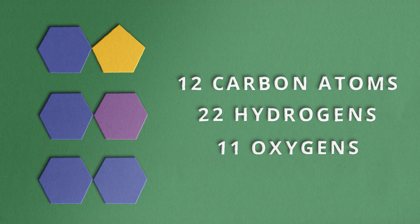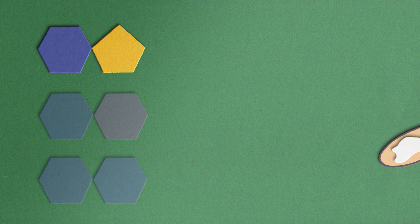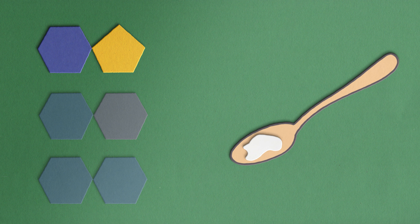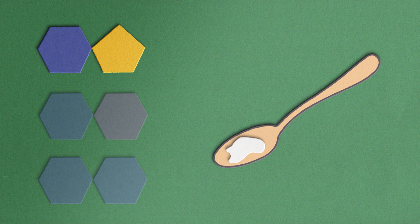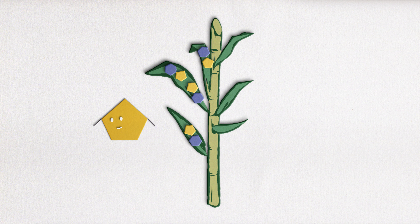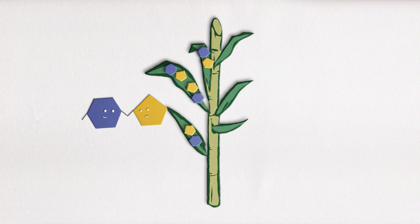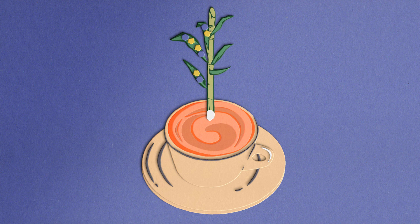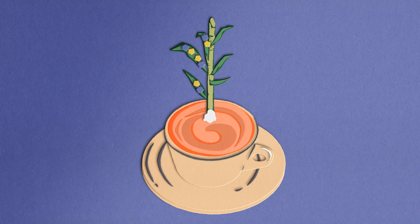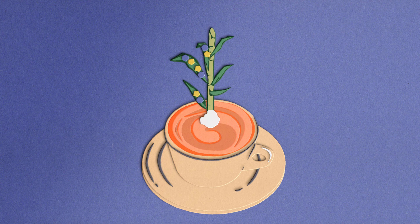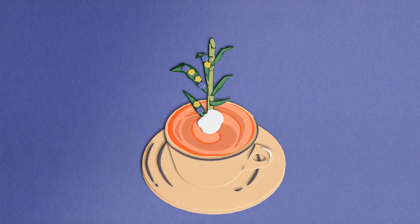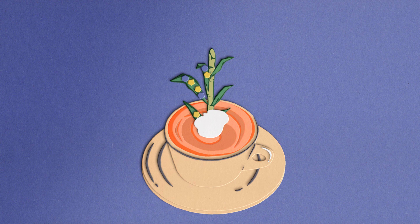Let's begin with sucrose, which you would find in things like your table sugar. Fructose and glucose are combined together naturally within plants to create sucrose, which is then extracted and refined to make the sugar you put in your tea.